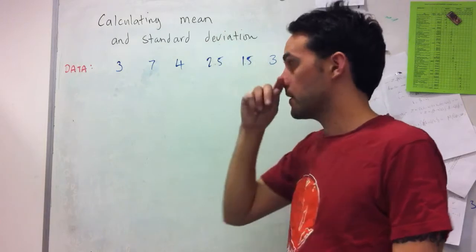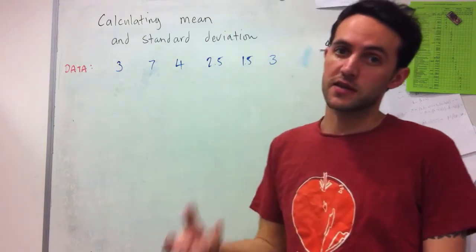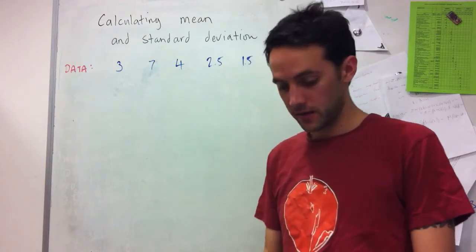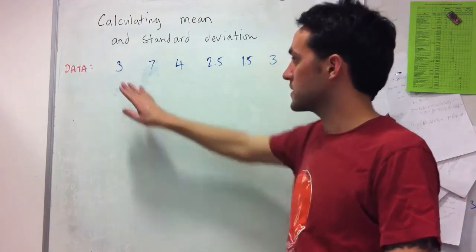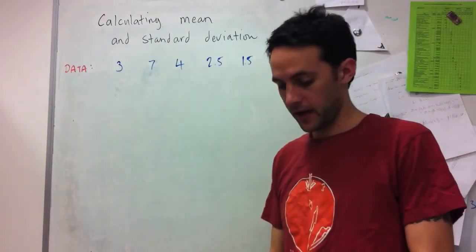So the mean, which is also often referred to just as the average or the statistical average, or it can be called the arithmetic mean as well, is just all of the data added up and then divided by how many data there are.